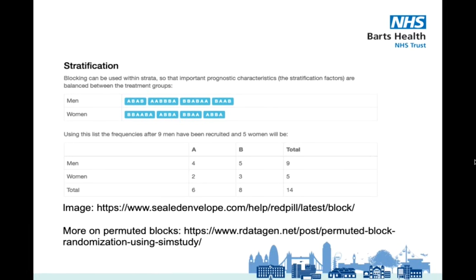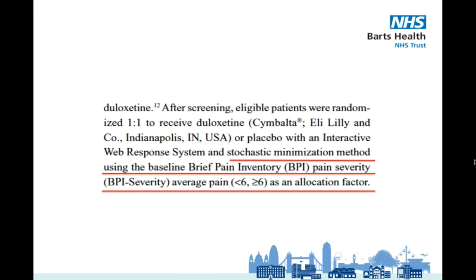In our study, the authors used strata to ensure there was an equal amount of people with similar baseline BPI scores across the groups, and to ensure that one group didn't end up with all the worst suffering patients by chance. This is a common and appropriate practice, so we can answer yes to the first two consideration points.